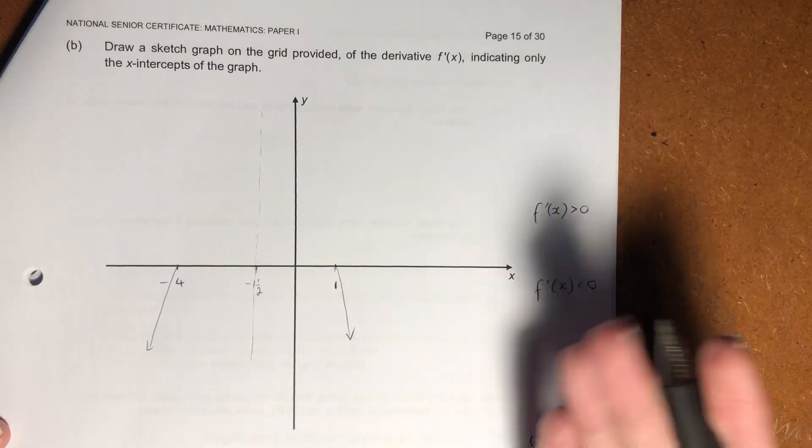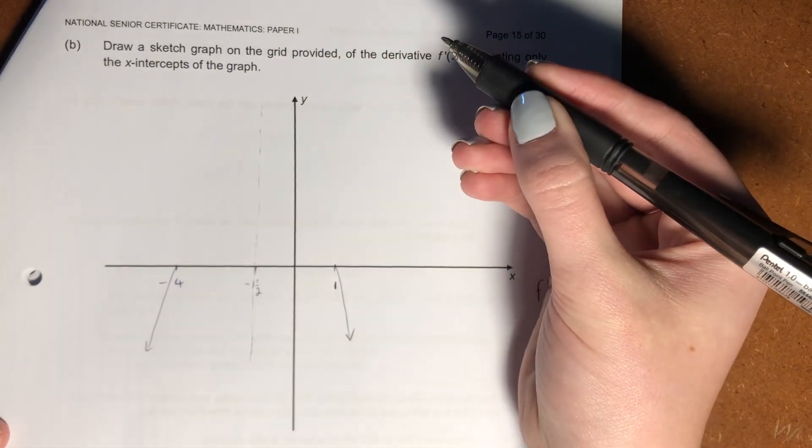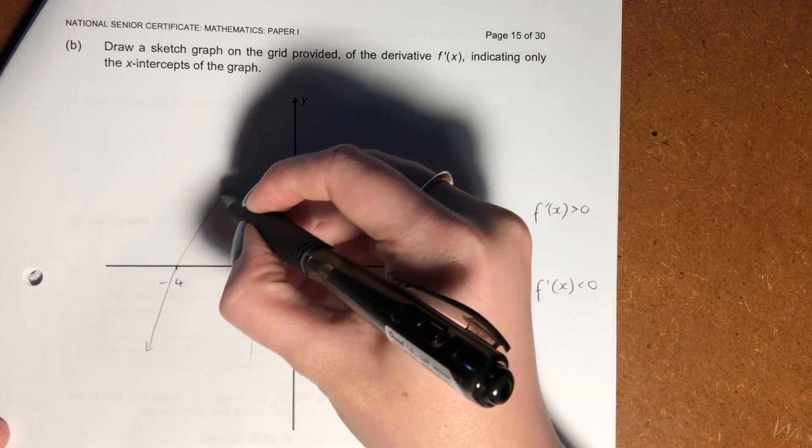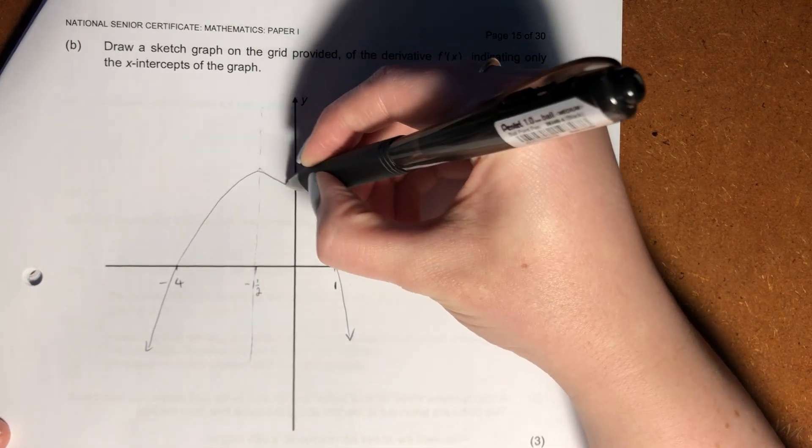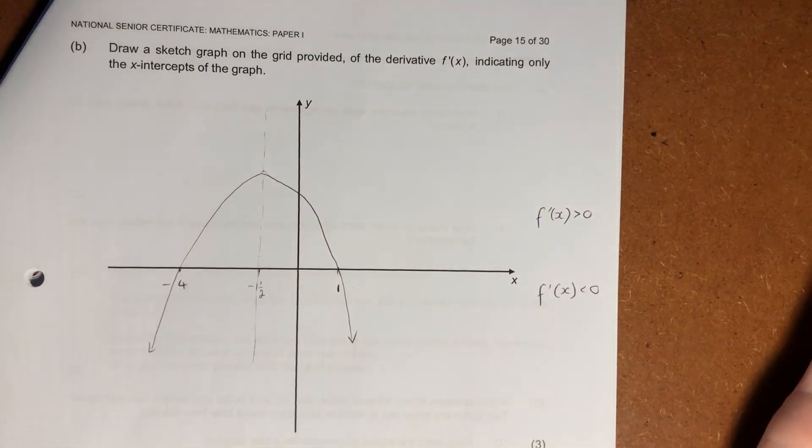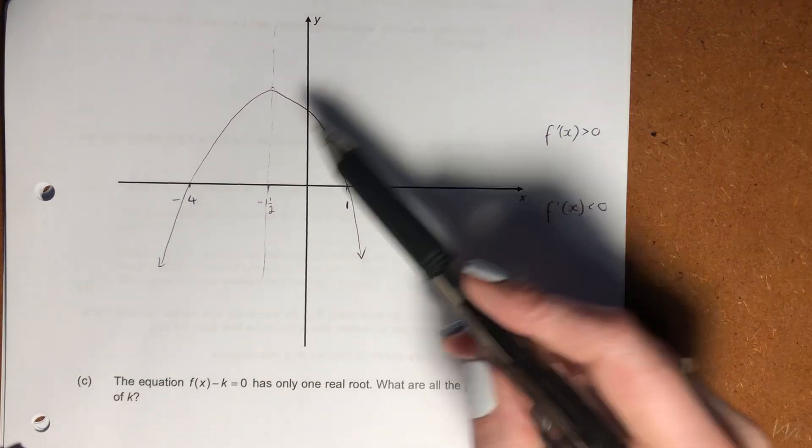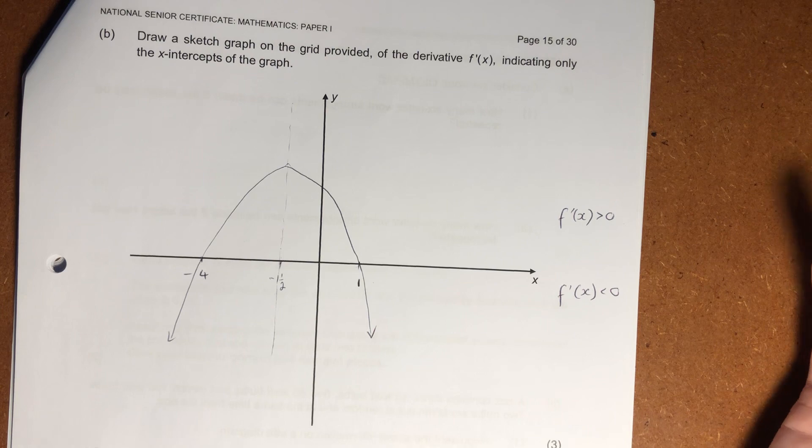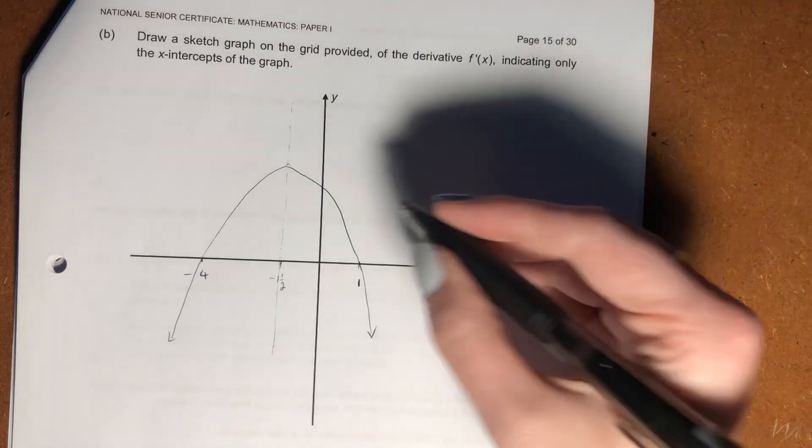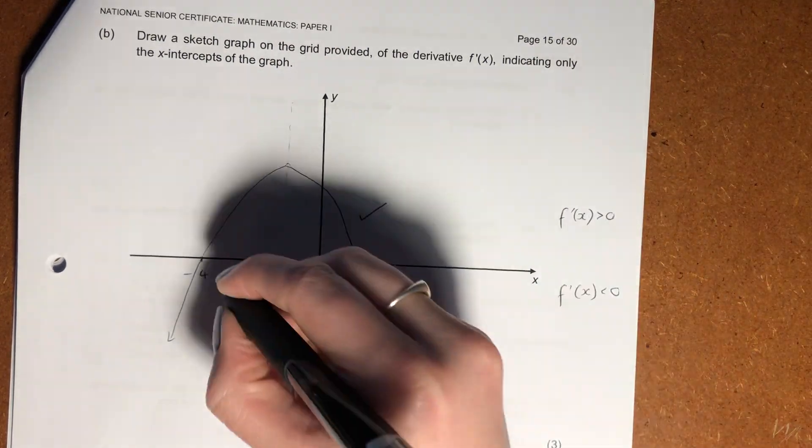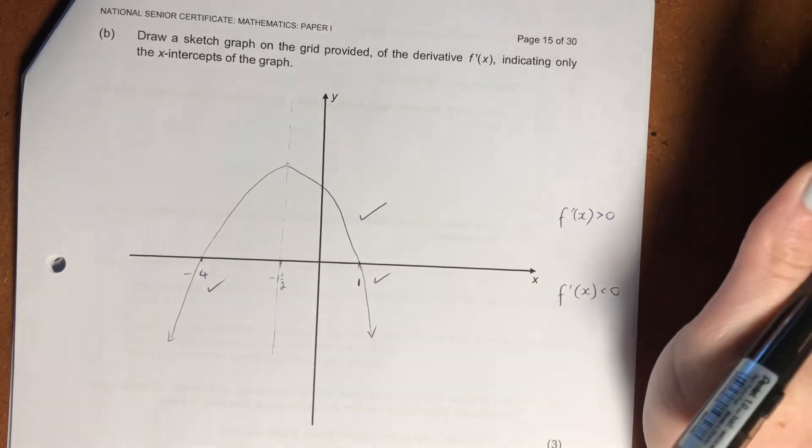We can't give exactly what our y-value is for our turning point, but we can basically just draw this in here, and that is kind of what we're looking for. Not a perfect graph, but it only asked us to indicate the x-intercepts. It didn't ask us to indicate the y-intercepts. So even this, you're not going to get any marks for. You'll get a mark for the shape, and you'll get a mark for each of those. So don't stress about that.